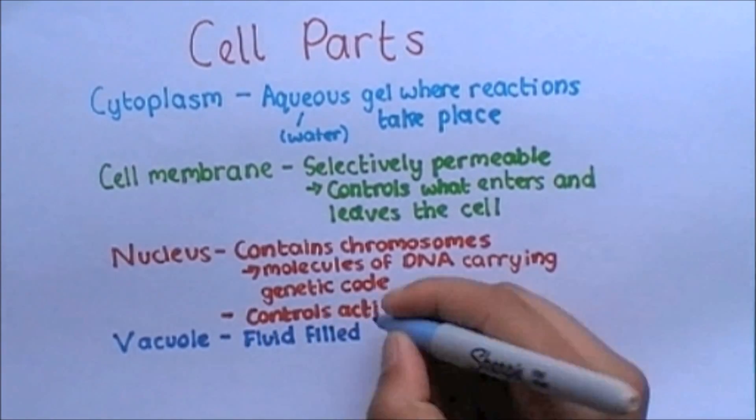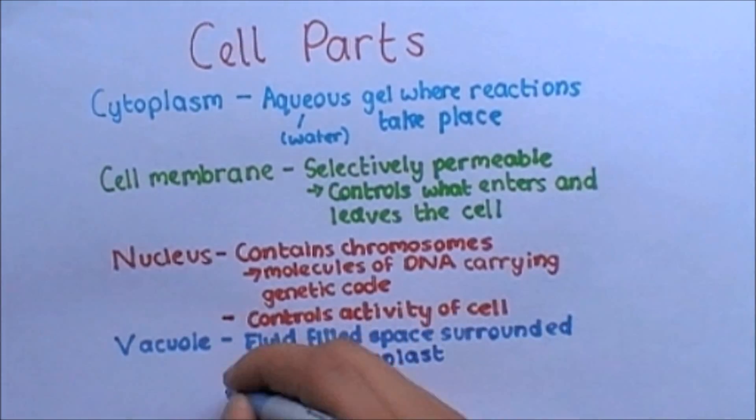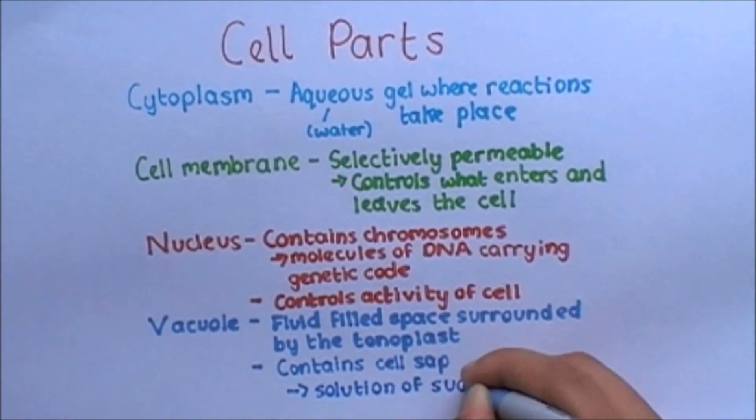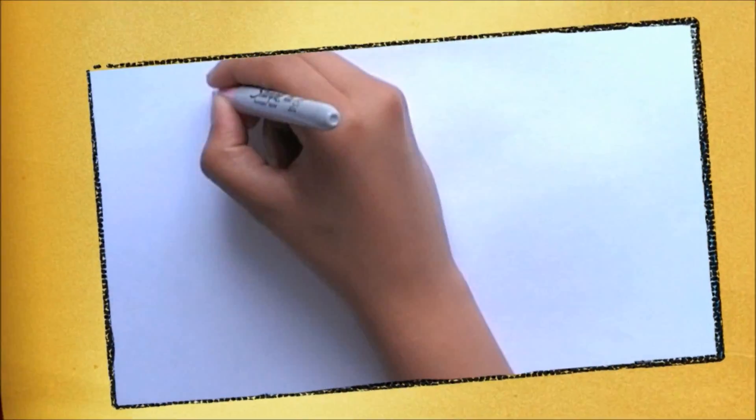The vacuole, which we saw in the plant cell, is a fluid-filled space, which is surrounded by the tonoplast. The vacuole contains cell sap, which is a solution of sugars and mineral ions.